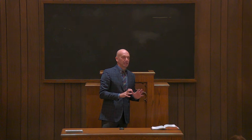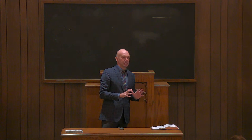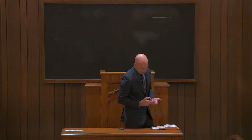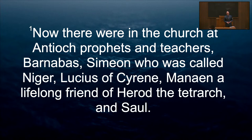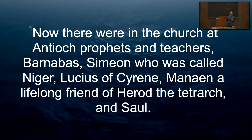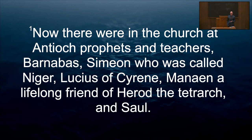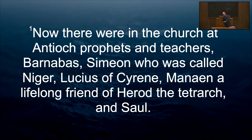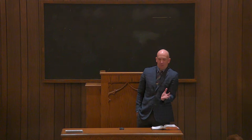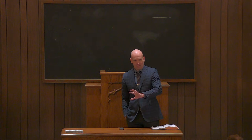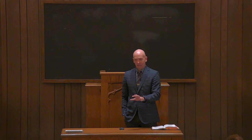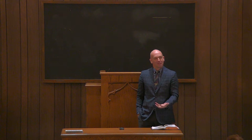Within this list, Luke gives the specific names: Barnabas, Simeon who was called Niger, Lucius of Cyrene, Manan a lifelong friend of Herod the Tetrarch, and Saul. Five names. Lists of names are often given in order of importance. Here the name Saul is used last in the list. As Acts moves forward, you have Barnabas and Saul, then Barnabas and Paul, then Paul and Barnabas. It's worthy of note that Saul's name was at the last here as they began.